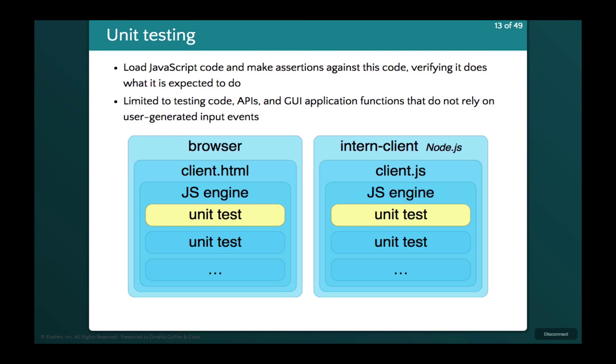With unit testing, we take the code, load it into the browser or environment, run the code, and verify it's doing what it says. We can run it two ways: load the page in the browser and use that browser's JavaScript engine — V8 in Chrome, Firefox, etc. — or use intern client to run tests in Node. The big difference is it's not using PhantomJS under the covers. If your code tries to access the document, window, or browser-specific variables, it will fail in Node — that's only for code that can also run in Node.